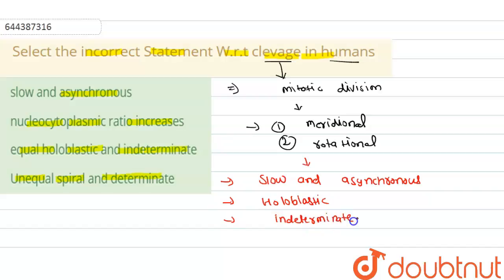Indeterminate means that the cells of the early embryonic stage can form the complete embryo after the stage, so it is called indeterminate cleavage.